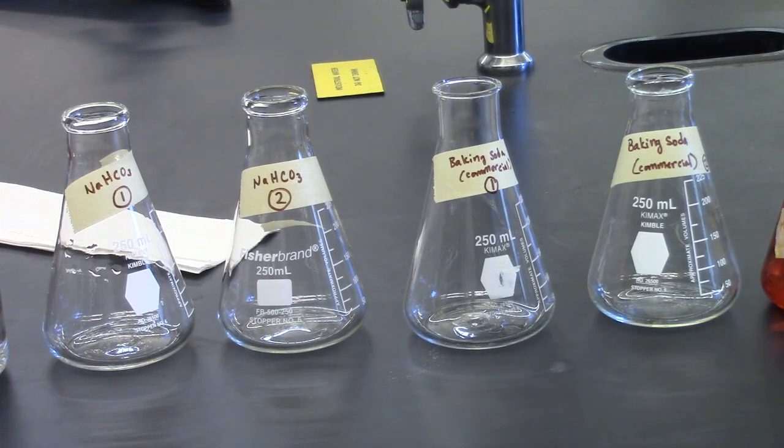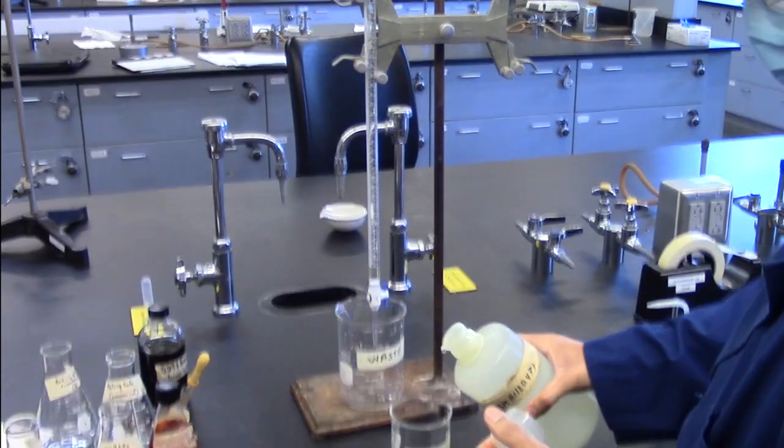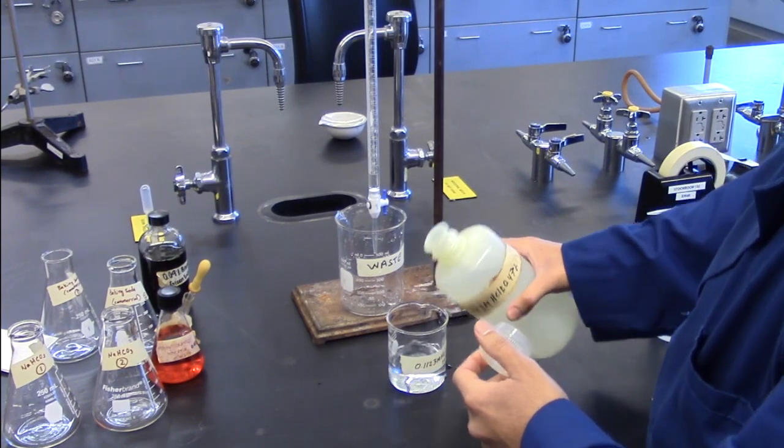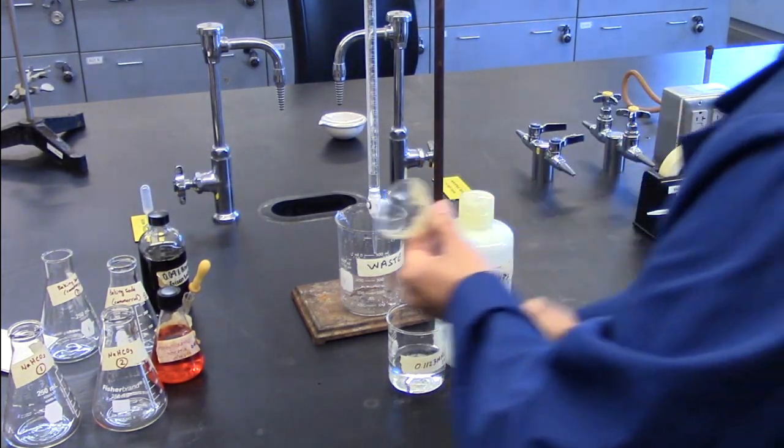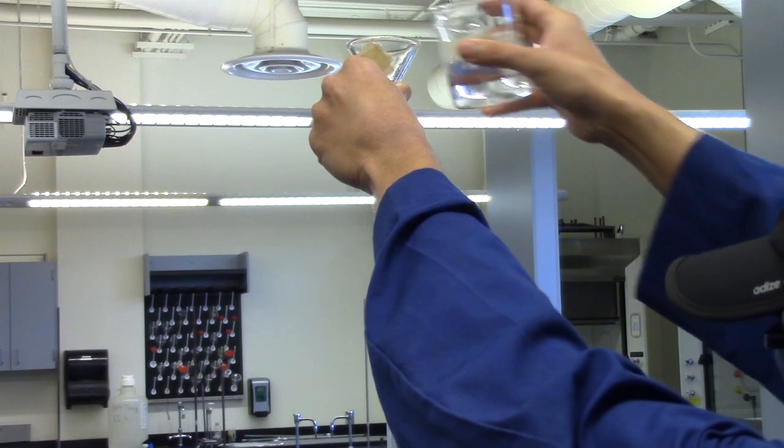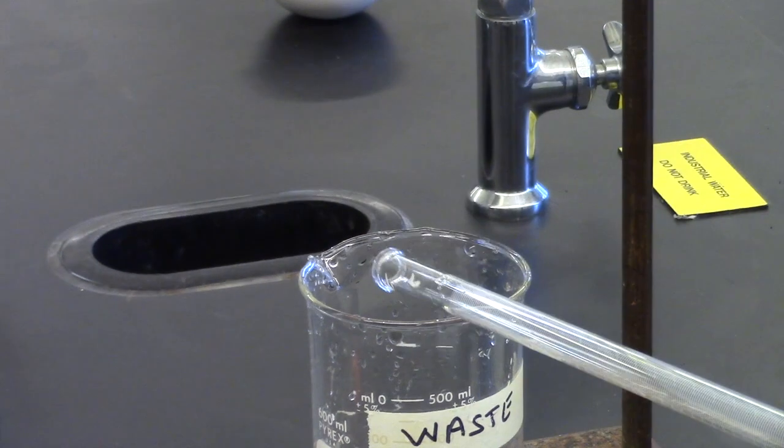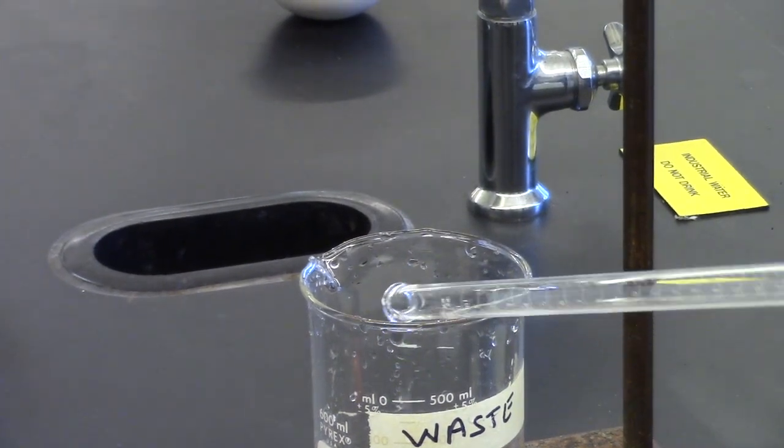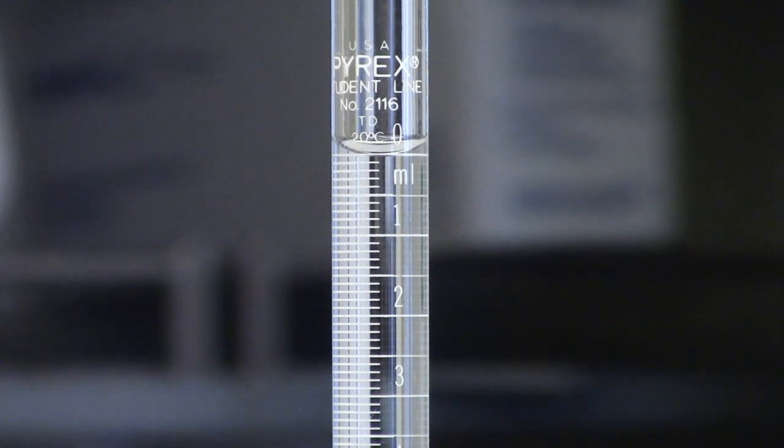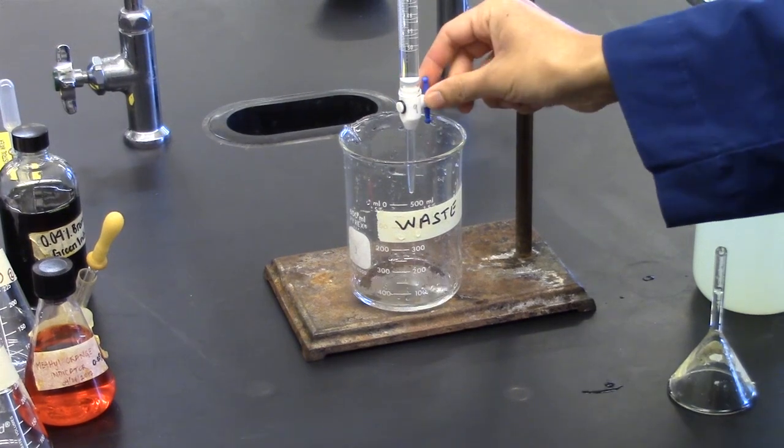You will need four 250 milliliter or 125 milliliter Erlenmeyer flasks, burette clamp, burette, ring stand, and a white background. In a clean 250 milliliter beaker, get about 120 milliliters of the standard hydrochloric acid solution and record the molarity. Rinse the burette twice with 5 ml portions of the standard hydrochloric acid solution. Fill the burette to the zero mark with a standard hydrochloric acid solution. Check tip of the burette for air bubbles.